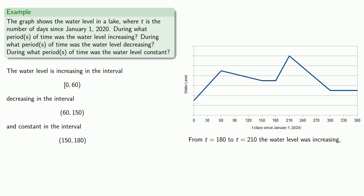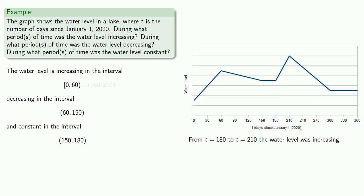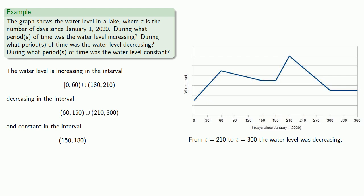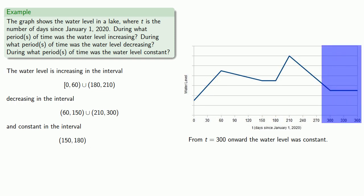From t equals 180 to t equals 210, the water level was increasing, so we union that with our increasing interval. From t equals 210 to t equals 300, the water level was decreasing, so we union that with our decreasing interval. From t equals 300 onward to the end of the graph at t equals 360, the water level was constant. Since 360 is the actual end of the graph, we include it in our interval using a square bracket at 360.